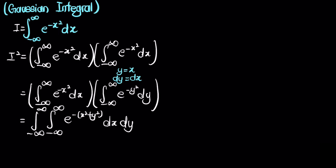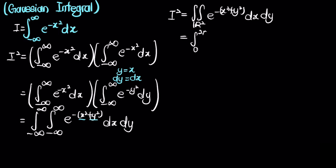Because we have x squared plus y squared, this is well-suited for polar form integration. We can change this into a polar form where the region of integration is all possible points in R². We integrate from 0 to 2π for theta, and 0 to infinity for r, with integrand e to the negative r squared — where r squared equals x squared plus y squared. We multiply by the Jacobian factor r, giving dr dθ.